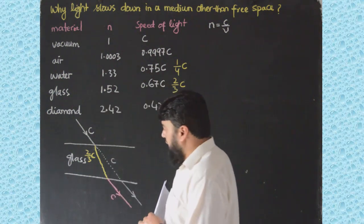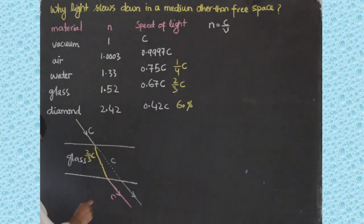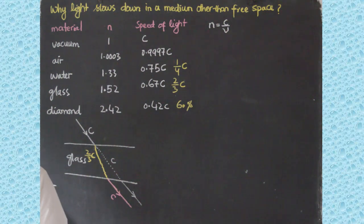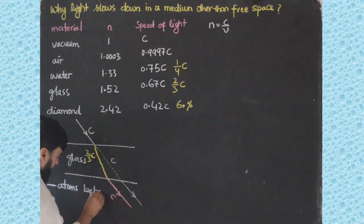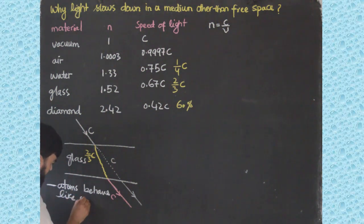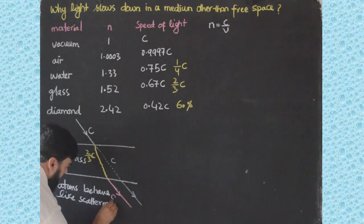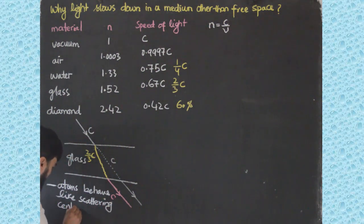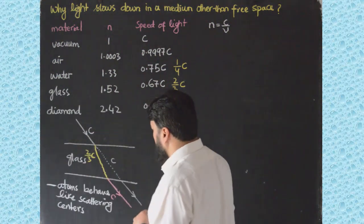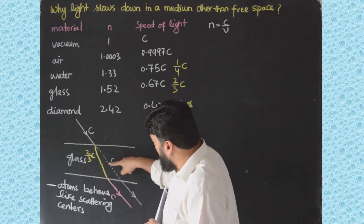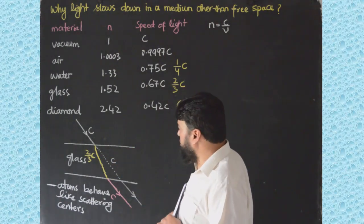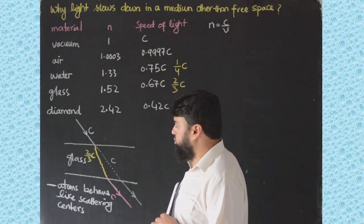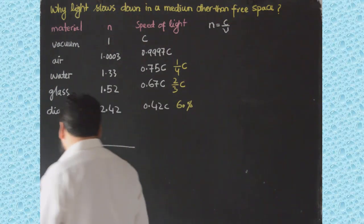There are some explanations which are not complete or not correct. One of those incorrect explanations is that atoms behave like scattering centers, and those atoms actually scatter this light — that is why its speed is reduced. When the material is finished, the light goes with the same speed. But this explanation is not right.